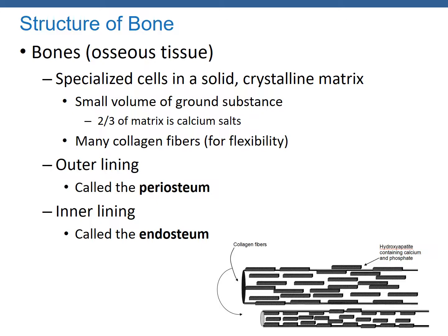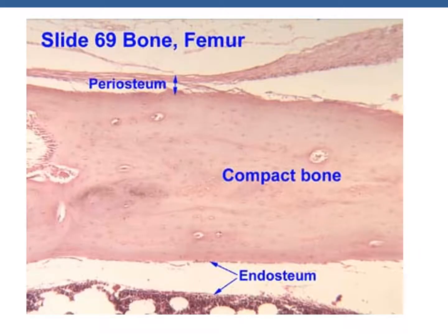Bone is another type of connective tissue and makes up the bulk of the skeletal system. Bone itself is an osseous tissue. It has specialized cells called osteocytes and a solid crystalline matrix. It has a very small volume of ground substance, with two-thirds of the matrix being calcium salts, and many collagen fibers dominating the bone, which adds a great degree of flexibility. The outer lining of bone has a connective tissue layer called the periosteum, whereas the inner lining, just before the medullary cavity, is called the endosteum. A histological slide shows the periosteum on the outside and the endosteum on the inside of compact bone.